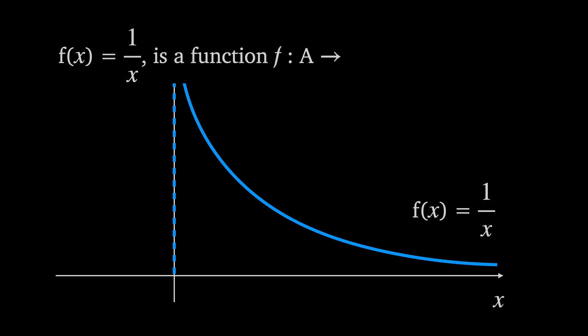And so coming back to the function one over x which isn't defined at x equals zero. We see now that restricting the domain of f so that it doesn't include zero solves this problem.